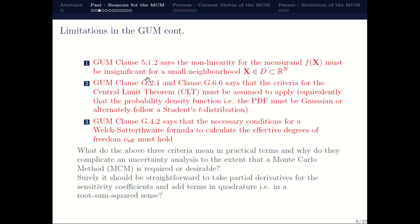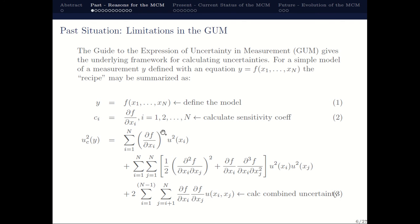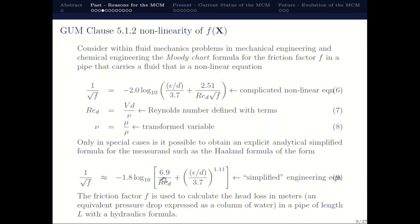If you just take the partial derivatives and sensitivity coefficients and add things up in a root-sum-square sense, in principle that should be all that is necessary. The question is: if it is so straightforward at a conceptual level, why is there a need to use something like a Monte Carlo method? I'm a mechanical engineer and I work mainly in fluid mechanics and heat transfer, and this is a representative example of a typical problem where the simplified GUM approach would not necessarily work.